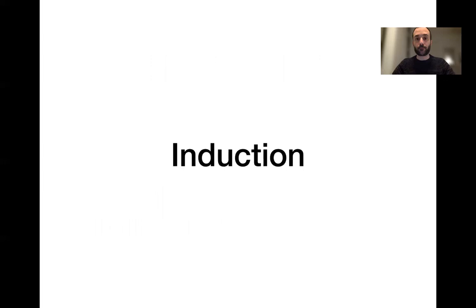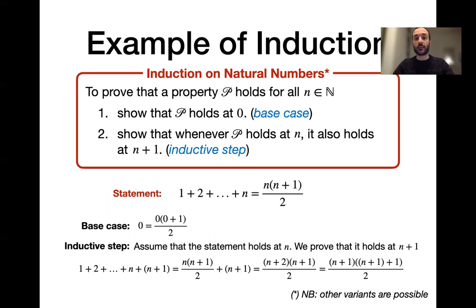Let's move first to see what the concept of induction is. You might have heard of the concept of induction, and specifically the concept of induction on natural numbers. This concept allows you to prove that a given property P holds for all natural numbers. In order to do that, the concept of induction requires you to prove two things. First, you need to prove a base case, meaning that you have to show that P holds for 0. Then you need to do a proof of the inductive step, meaning that you have to show that the property P holds at n plus 1, assuming that this property P holds at n.